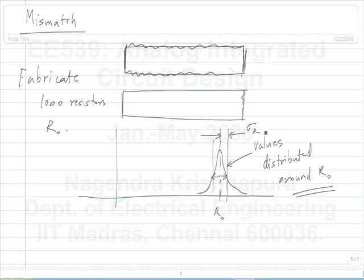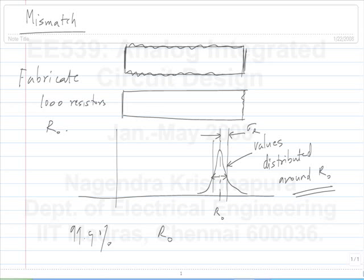Given that it is a Gaussian, you can say that 999 out of a thousand resistors will be in the range R₀ ± 3σ. The actual value of sigma depends on the value of the resistance itself, as we will see very soon.